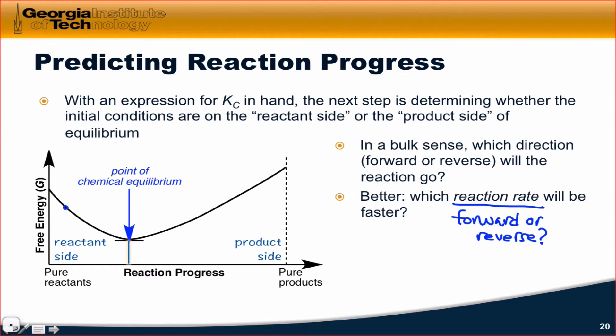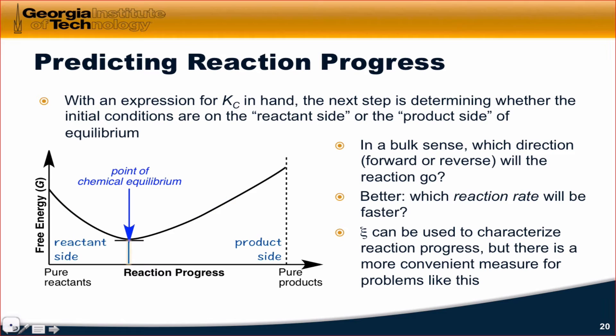If we're on the reactant side, then the forward reaction rate will be faster than the reverse reaction rate. But if we're on the product side, then the reverse reaction rate will be faster than the forward reaction rate.